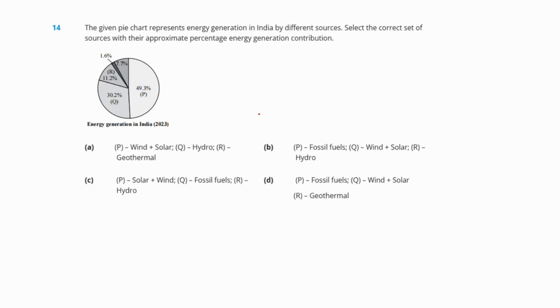Question 14: The given pie chart represents energy generation in India by different sources. P is 49.3%, Q is 30.2%, R is 11.2%. P being 49.3% should be fossil fuel. Q having 30.2% can be natural resources like wind or solar energy. R being 11.2% can be hydro energy. So our correct answer is option B.